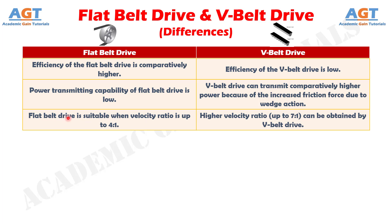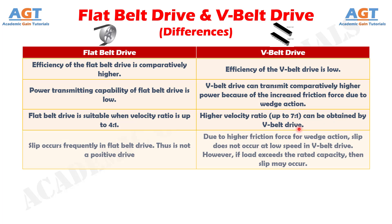Number 9: flat belt drive is suitable when velocity ratio is up to 4 is to 1, whereas a higher velocity ratio, up to 7 is to 1, can be obtained by V-belt drive. Number 10: slip occurs frequently in flat belt drive, thus it is not a positive drive, whereas due to higher friction force from wedge action, slip does not occur at low speed in V-belt drive.